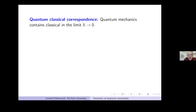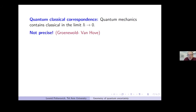I'm going to discuss quantum-classical correspondence, namely the thesis that quantum mechanics contains classical mechanics in the limit as h-bar goes to zero. The main feature of this correspondence is that it is not precise — this is a classical result.